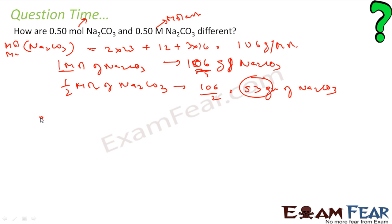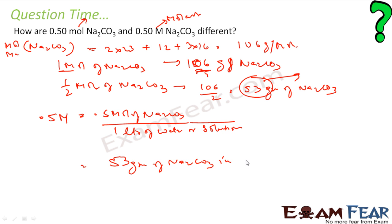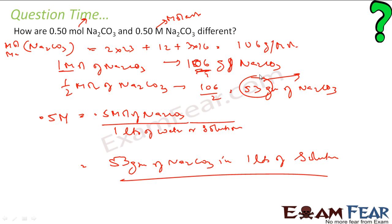But when I say 0.5 molarity of Na2CO3, that means 0.5 mol of Na2CO3 in 1 liter of solution. Both are different — in one case I am talking about 53 grams of Na2CO3, and in the other case I am talking about 53 grams of Na2CO3 dissolved in 1 liter of solution, because it is molarity.